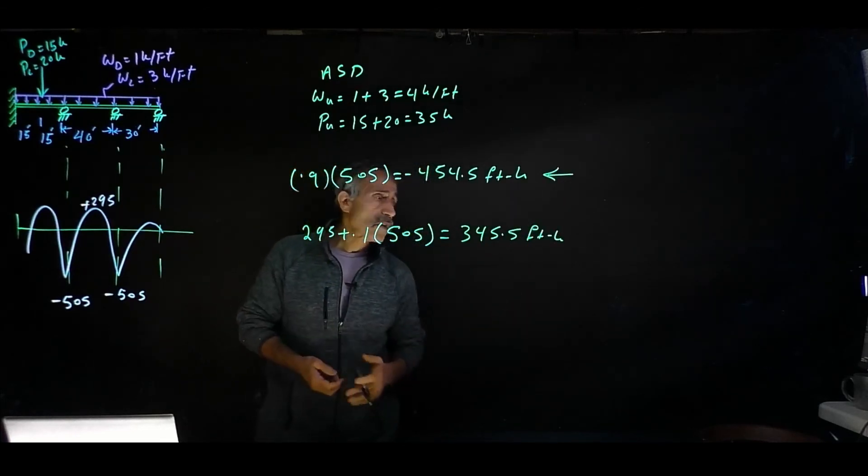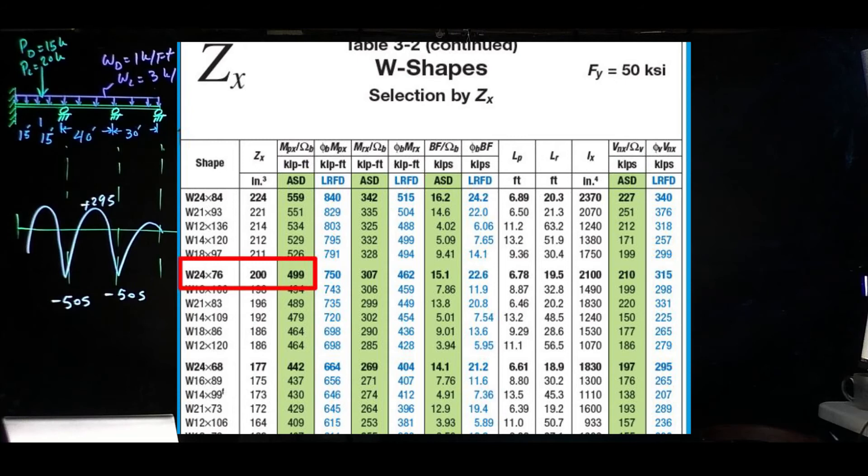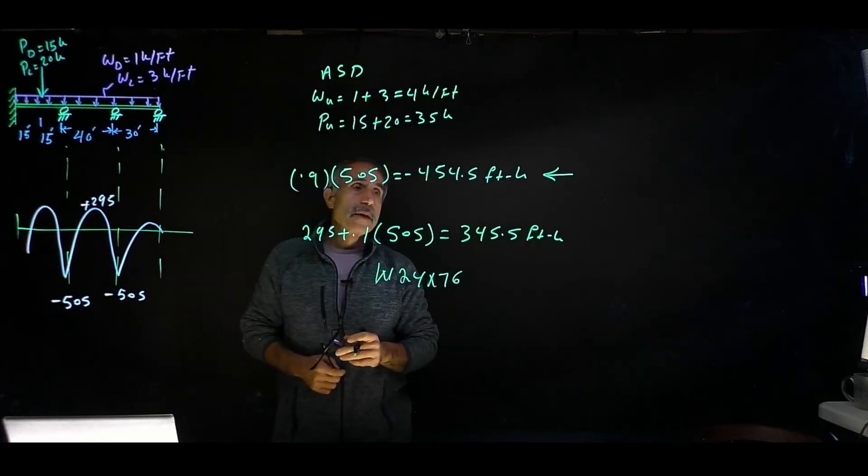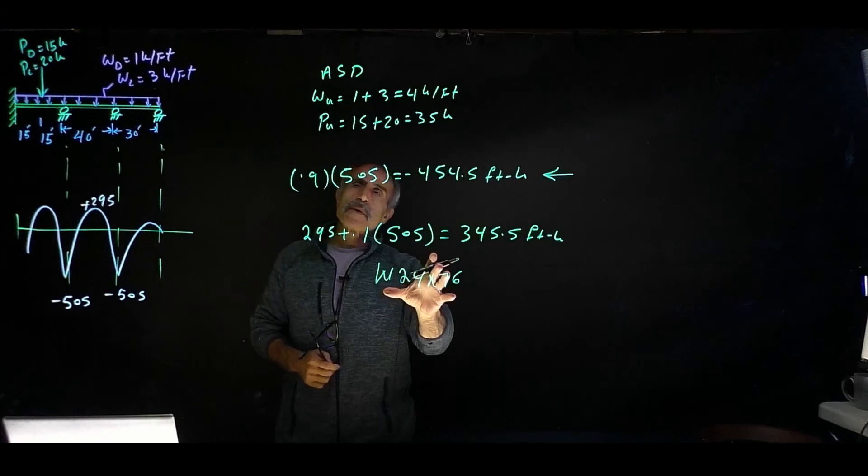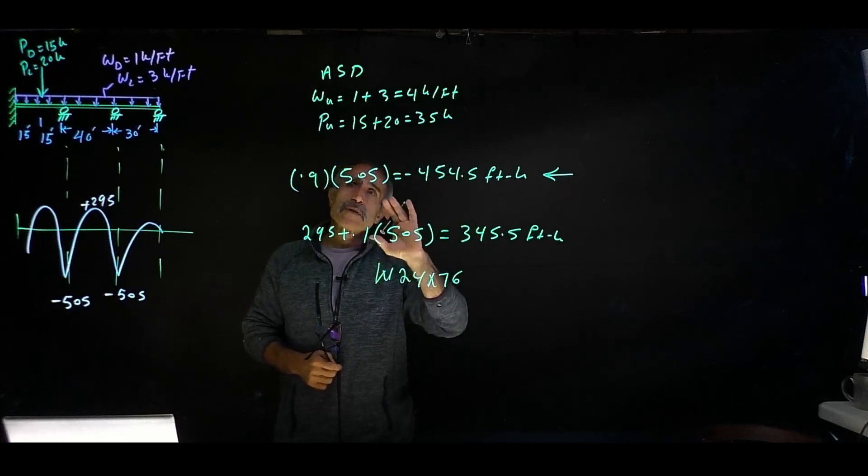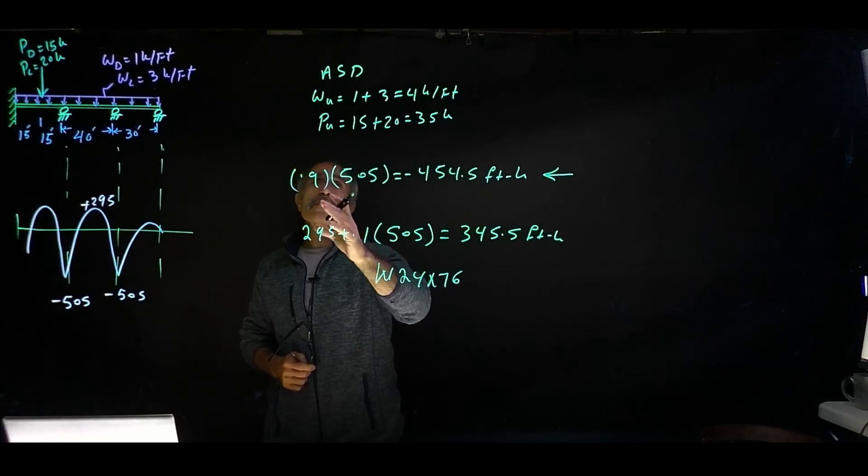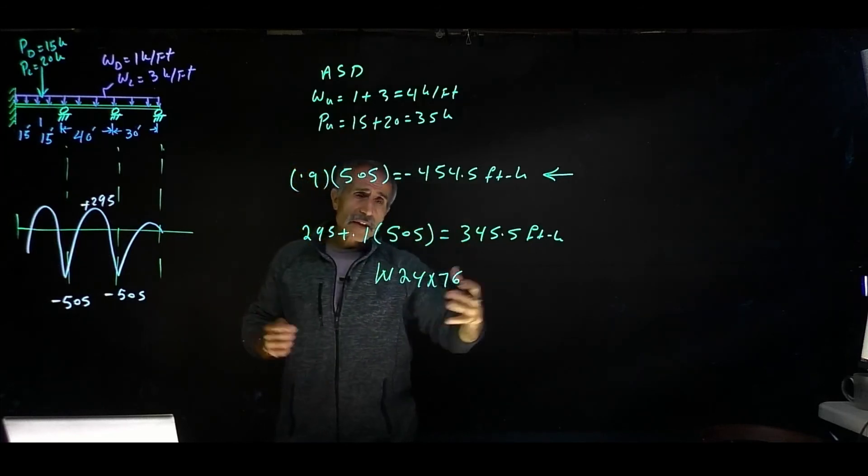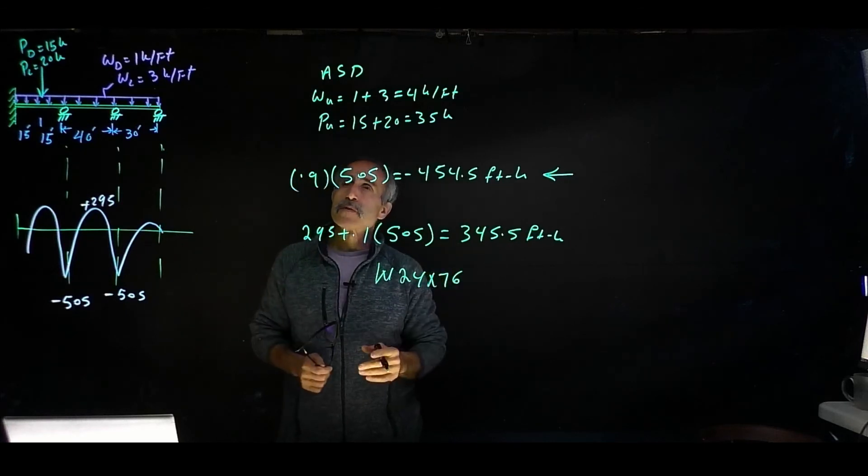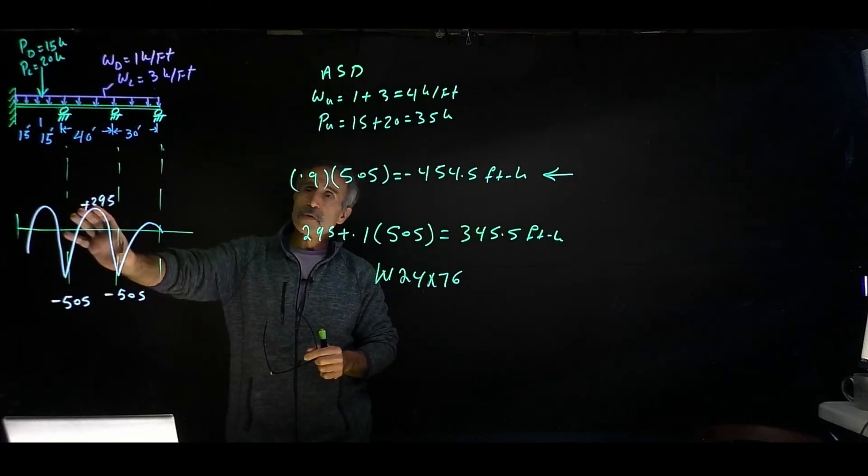You can basically go to the table. Go to table 3.2 and select the W24 by 76. And you can see this one came out a little bigger than the plastic analysis that we did. And that's why it really pays off always when you do a design, do both load-resistant factor design and allowable stress design and then compare them and whatever your comfort level is, pick the one that you're comfortable. Don't be afraid to go one size larger. And now I'm going to show you how we calculate this using a computer.